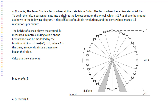As shown in the following diagram, a ride consists of multiple revolutions, and the ferris wheel makes 1.5 revolutions per minute. The height of a chair above the ground h, measured in meters during a ride on the ferris wheel, can be modeled by the function h equals negative a cosine bt plus d, where t is the time in seconds since a passenger begins the ride. Calculate the value of a.